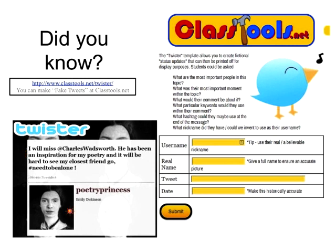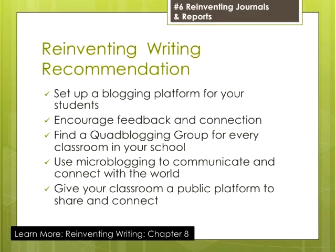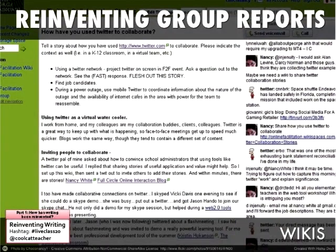Set up a blogging platform. Encourage feedback and connection. Find a quad-blogging group for every classroom in your school — this makes blogging easy and is a tremendous best practice. Microblogging can communicate and connect with the world. Give your classroom a public platform to share somewhere. And one of my favorite tools is the wiki — do students know how to write wikis, solve wiki wars, cite sources, embed content, and use the discussion tab?